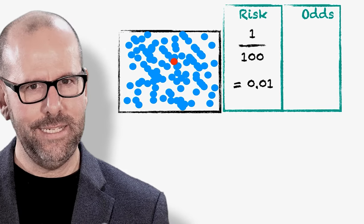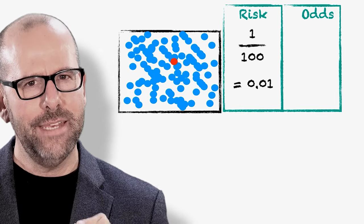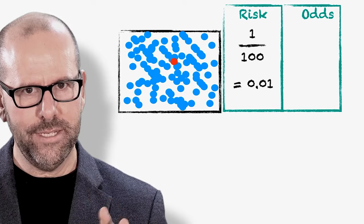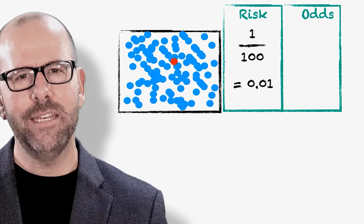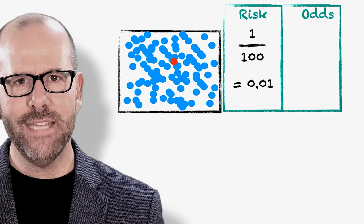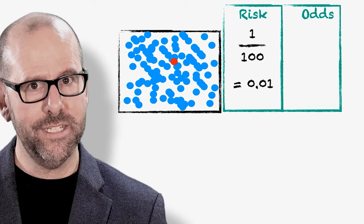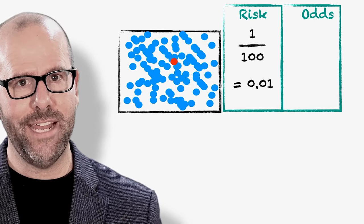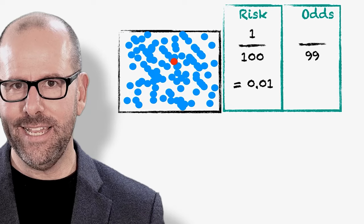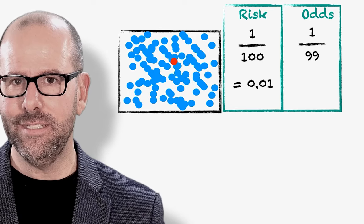The odds of sneezing is slightly different. Now it's one, that's the numerator, the number of people that had this health outcome, divided by the number of people who didn't have the health outcome. Not the number of people at risk at the beginning, but the number of people who didn't have that outcome. In this case, it's 99, because 99 people didn't sneeze.